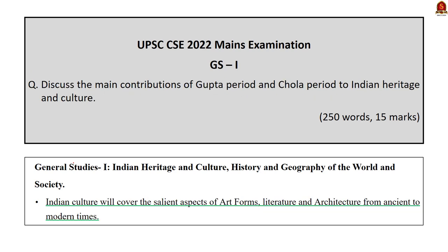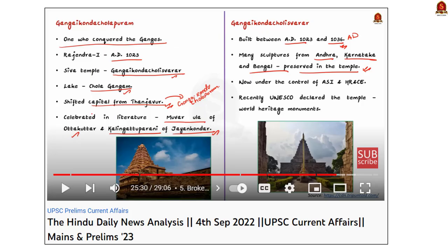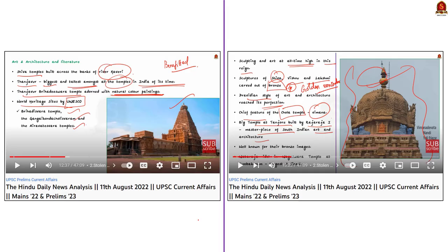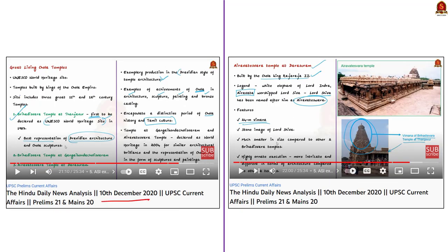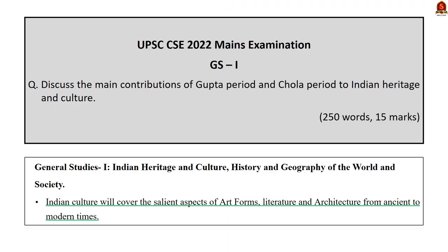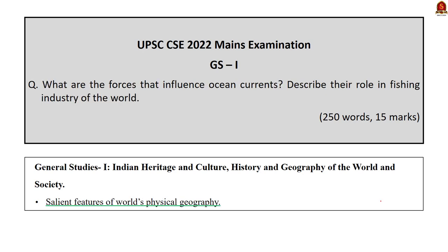Question number 12 in GS Paper 1: 'Discuss the main contributions of the Gupta period and Chola period to Indian heritage and culture.' This is a very direct and static question. In our Hindu News Analysis, we covered the contribution of the Chola period to Indian heritage and culture quite extensively — on 4th September 2022, 11th August 2022, 22nd April 2022, 2nd August 2021, and 10th December 2020. This covers 50% of the question. As far as the Guptas are concerned, we have not covered them as extensively, so using our Hindu News Analysis you can manage 50% of your answer for this question.